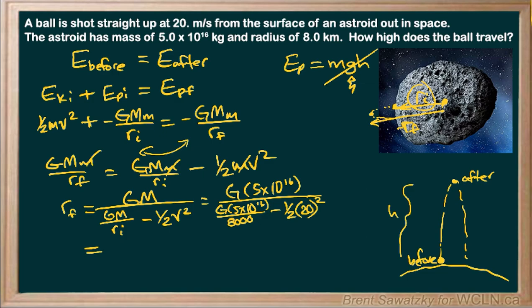We come up with, from our calculator, 15,380 meters. Okay. So is that our final answer? Well, we take a look at it. That's our r_f. So that's from the center of the asteroid to the center of the ball at its highest point.